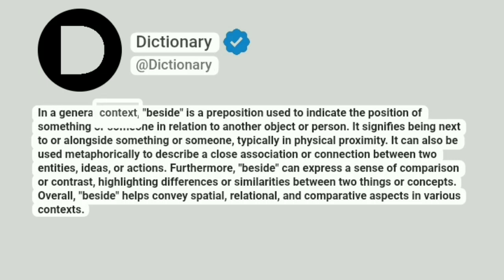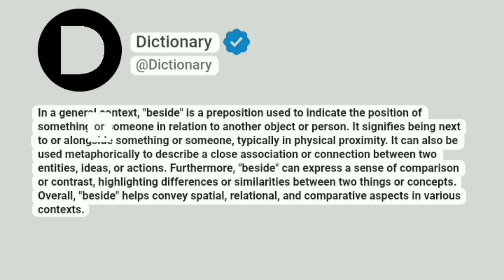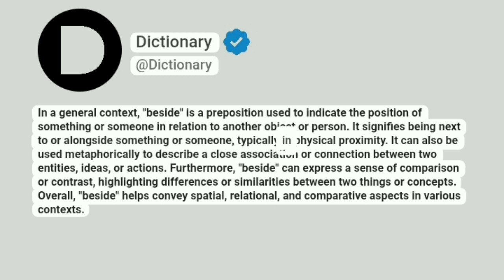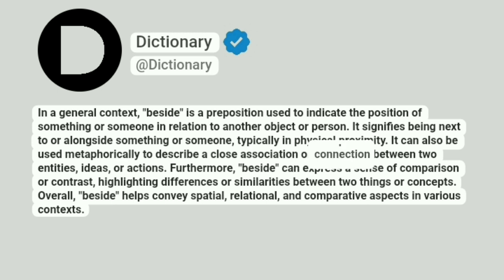In a general context, beside is a preposition used to indicate the position of something or someone in relation to another object or person. It signifies being next to or alongside something or someone, typically in physical proximity. It can also be used metaphorically to describe a close association or connection between two entities, ideas, or actions.